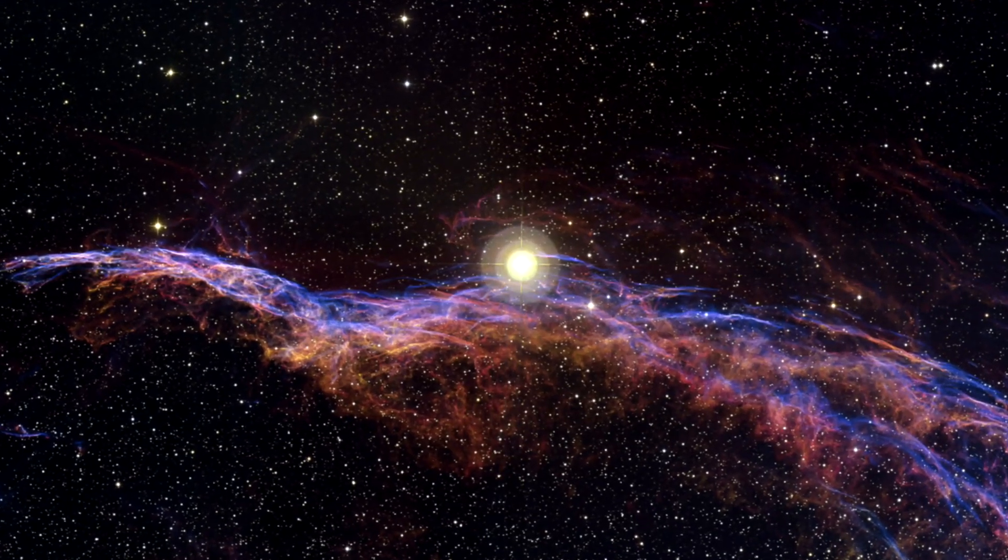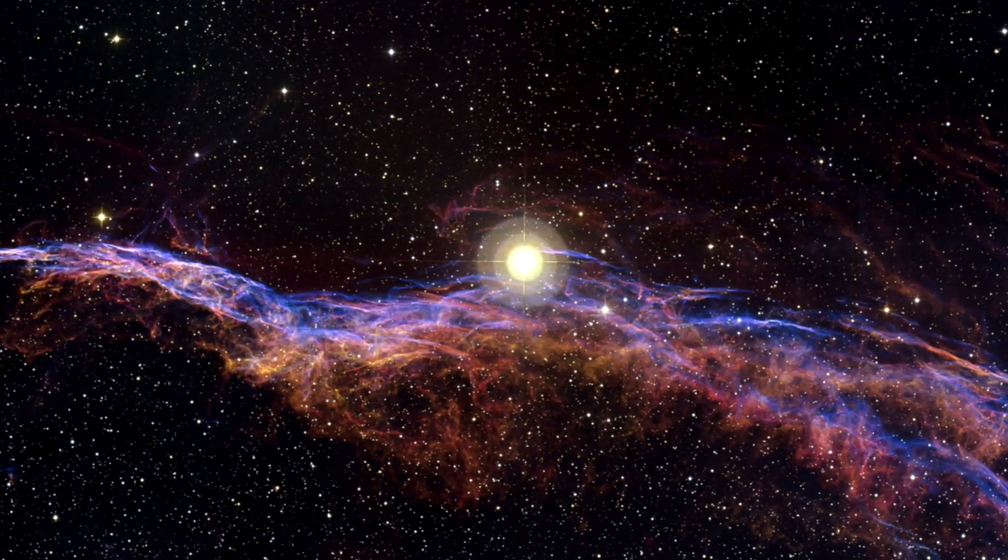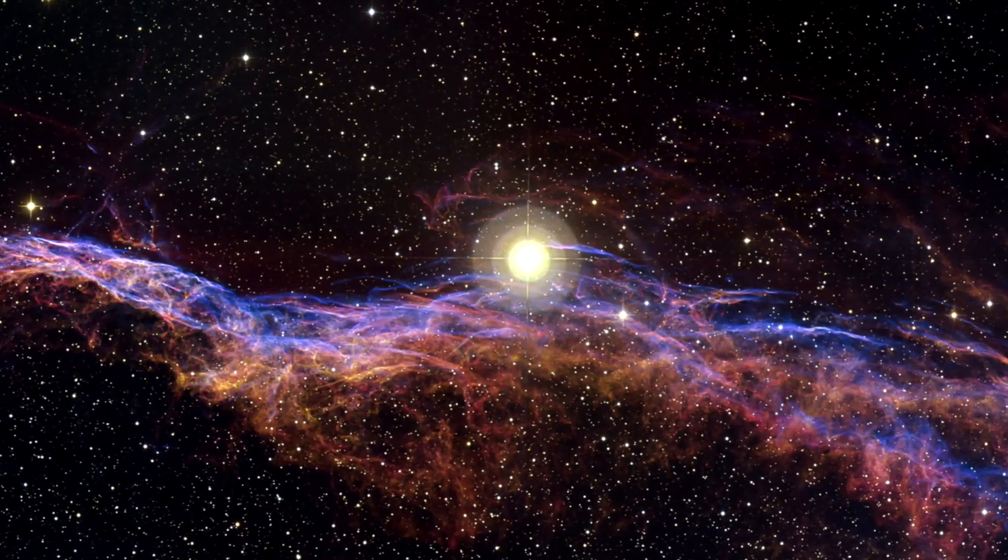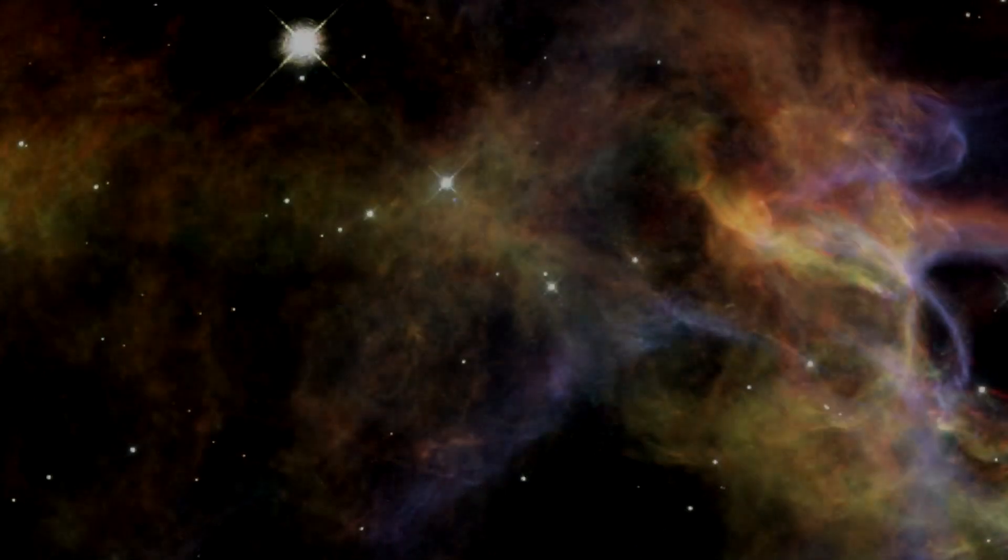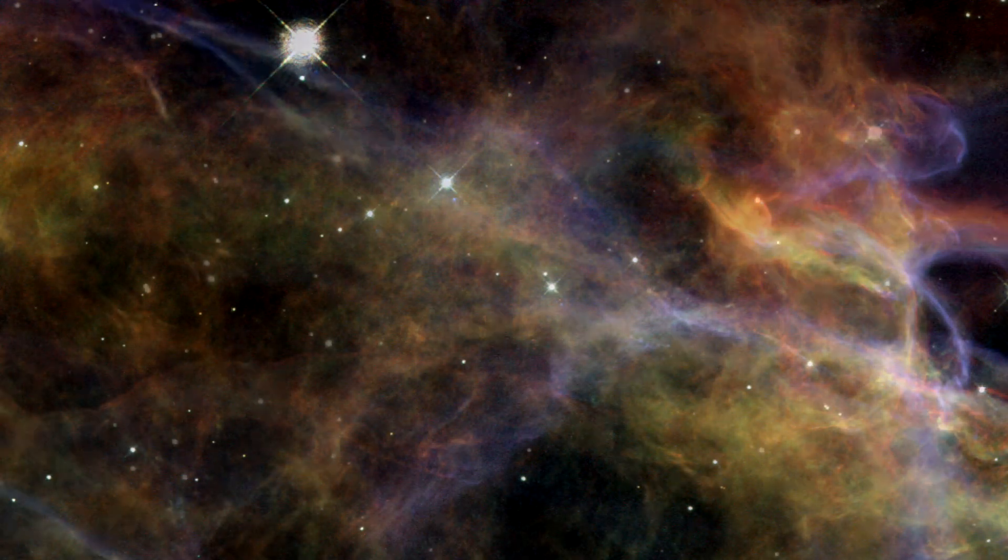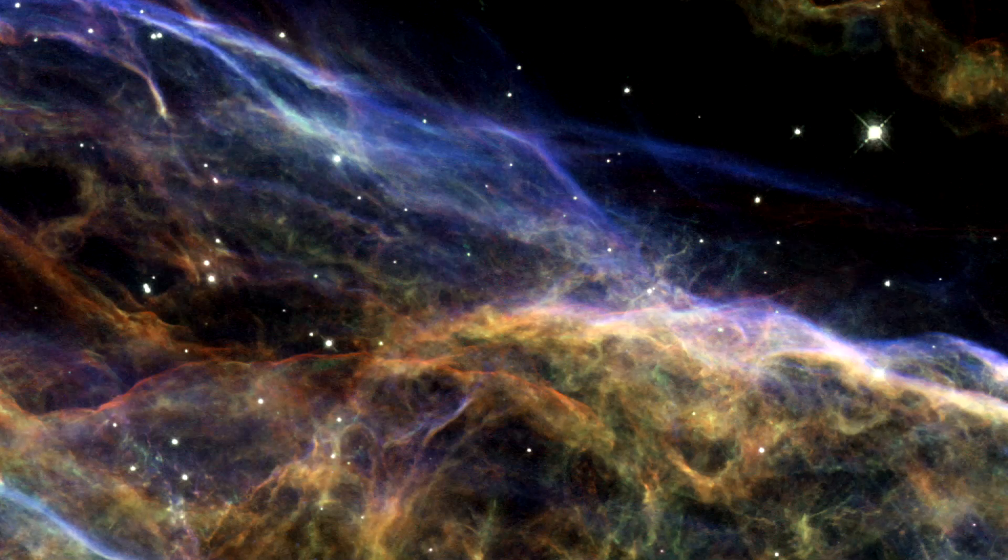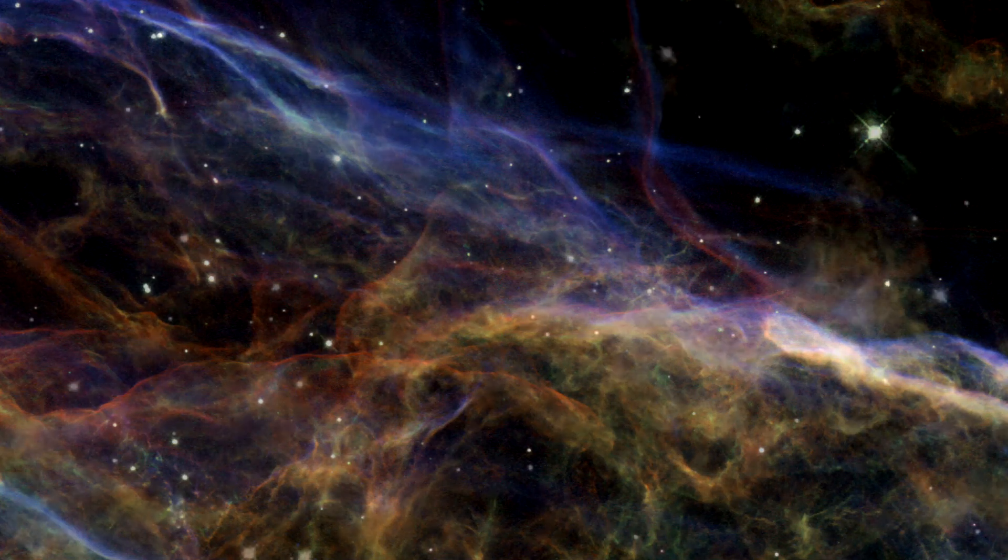The NASA ESA Hubble Space Telescope has recently revealed magnificent sections of the Veil Nebula, the shattered remains of a supernova that exploded some 5 to 10,000 years ago. The new Hubble images provide beautiful views of the delicate, wispy structure resulting from this cosmic cataclysm.